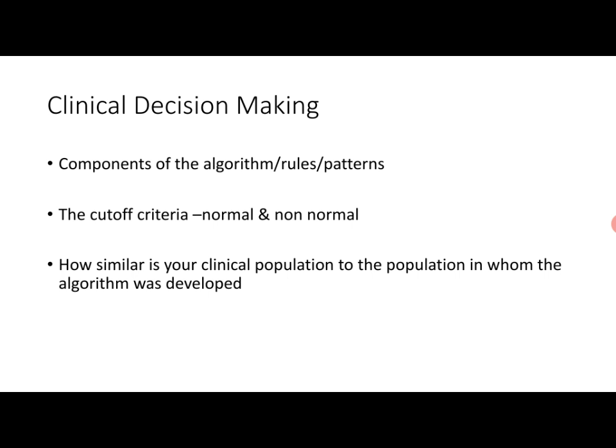You also need to know how similar your clinical population is to the population in whom the algorithm was developed. As we saw when we talked about sensitivity, specificity, and predictive values, we need to be very clear about how our clinical population is either similar or dissimilar from the population that was studied, or in whom the algorithm or clinical prediction rule was developed.